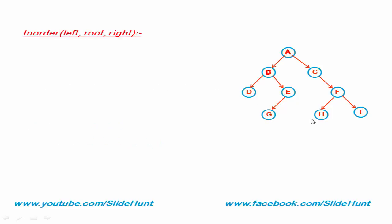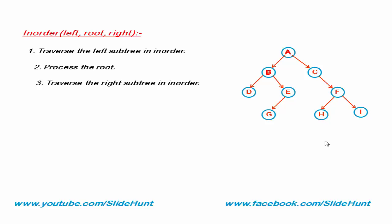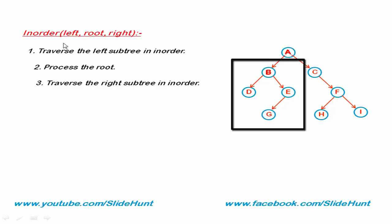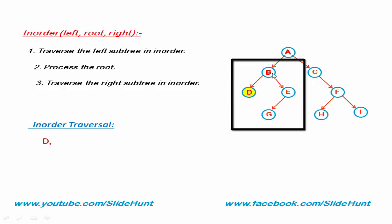Next, we learn in-order traversal. In in-order traversal, first we traverse the left subtree in in-order, then process the root, and then traverse the right subtree in in-order. Let's traverse this binary tree using in-order traversal. The root node is A, so we traverse the left subtree of A. Apply these three steps on this part. First, traverse the left subtree in in-order — the left subtree of B is D. Traverse the left subtree of D — D has no left subtree. Process the root: D is processed. D has no right subtree, so go back to B. The left subtree of B is processed. Now process the root — B is traversed.